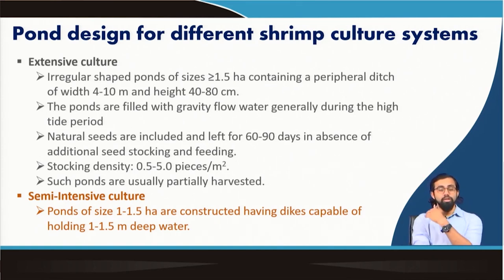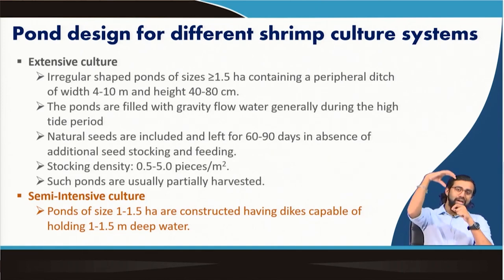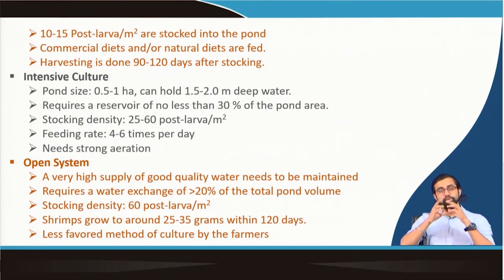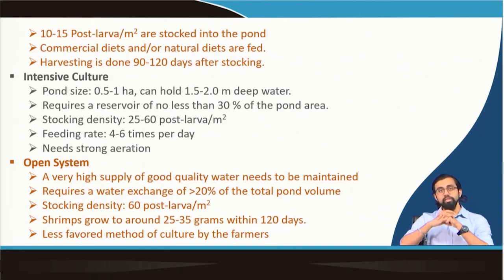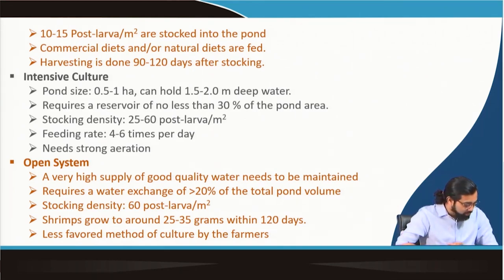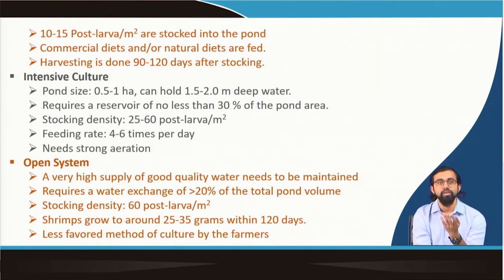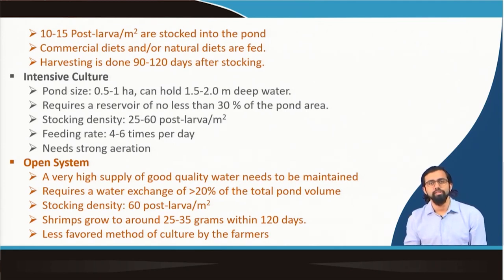In semi-intensive culture, ponds lie between 1 to 1.5 hectares, constructed with dikes capable of holding 1 to 1.5 meters of water depth, with a stocking intensity of 10 to 15 post-larvae per square meter. Some commercial feed is provided because natural feed in the pond is insufficient for the higher stocking density. Harvest normally occurs within 90 to 120 days after stocking.